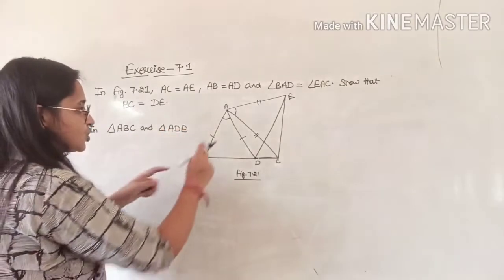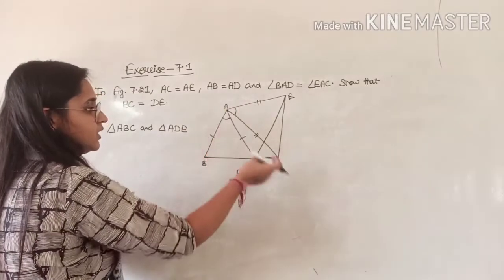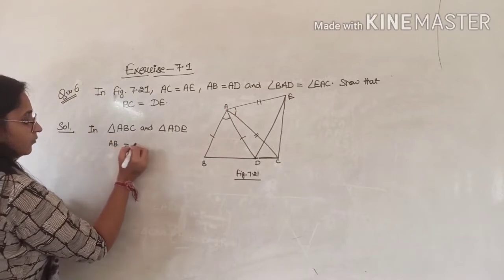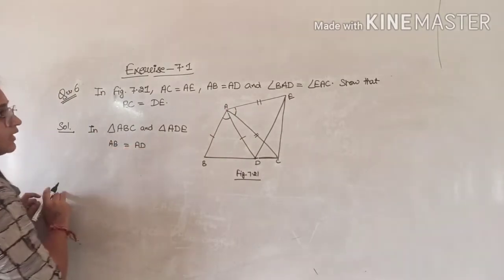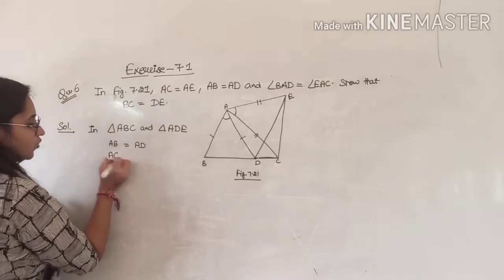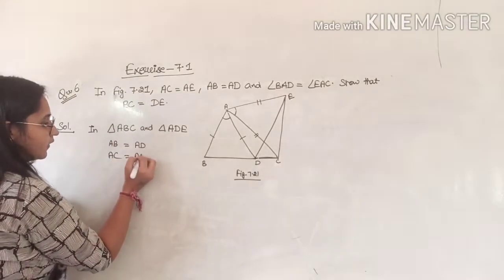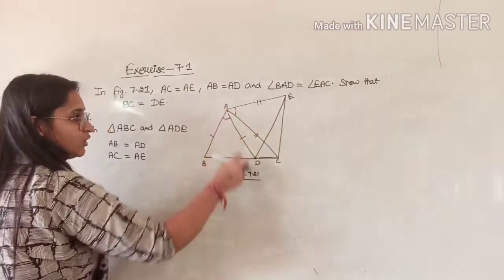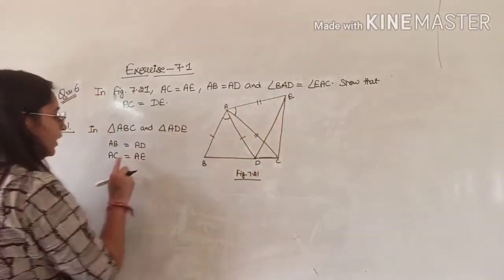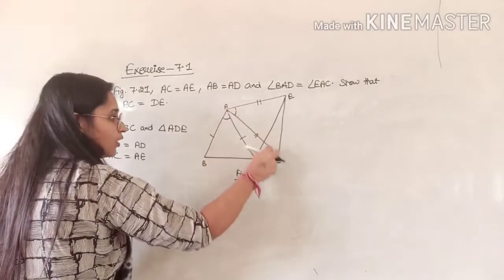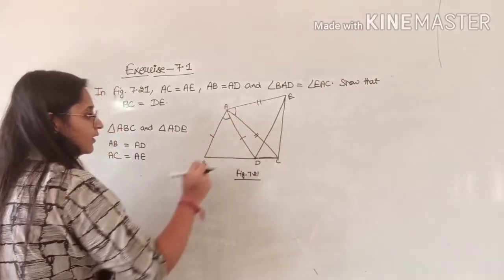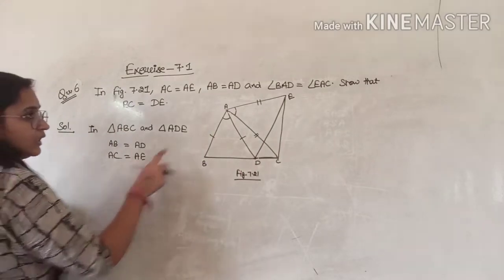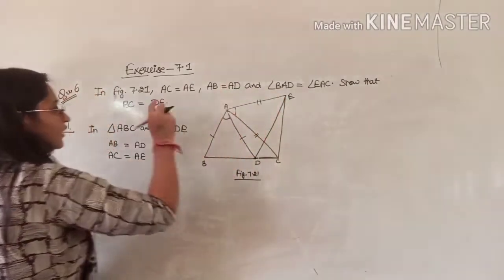In these two triangles, first of all AB is equal to AD — that is given. Second thing that is given: AC is equal to AE. So AB of triangle ABC is equal to AD of triangle ADE, and AC, the second side of triangle ABC, is equal to AE, the corresponding side of triangle ADE.